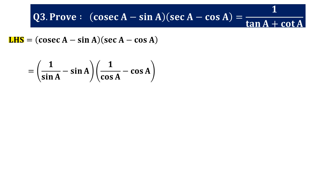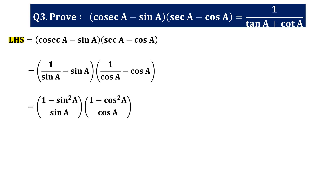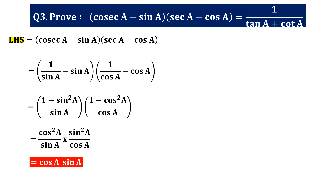Taking LCM in both brackets separately: the first bracket gives (1 − sin²a)/sin a and the second gives (1 − cos²a)/cos a. Now 1 − sin²a = cos²a and 1 − cos²a = sin²a. So we get (cos²a/sin a)(sin²a/cos a). One sin a and one cos a cancel, leaving us with cos a · sin a. So the left hand side reduces to cos a · sin a.